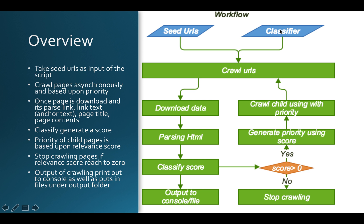The script takes a seed URL as input. Once the seed URL is passed, the script first initializes a classifier. I'm using a Naive Bayes classifier here. I could not find a good training set for the Naive Bayes classifier on the web, so I generated my own training set, extracted features, and fed them into the Naive Bayes classifier. I'm using the MetaPy third-party library for the Naive Bayes classifier. Once initialized, you pass that information to the crawler and start crawling URLs, downloading data asynchronously.